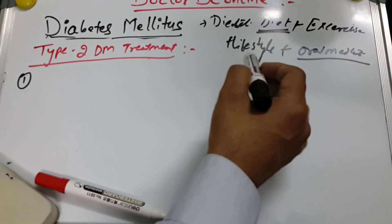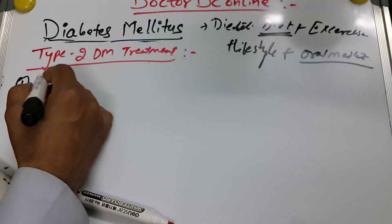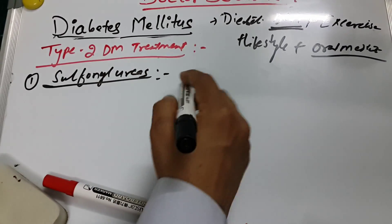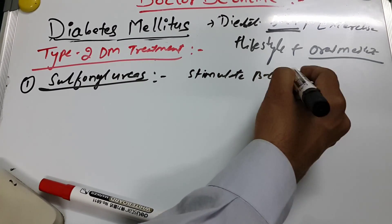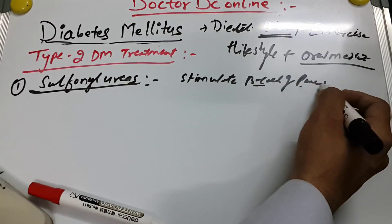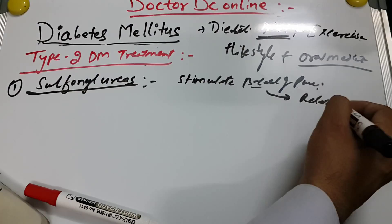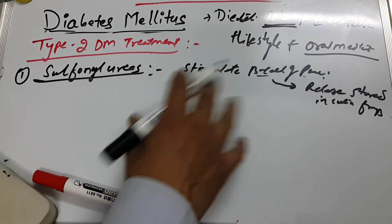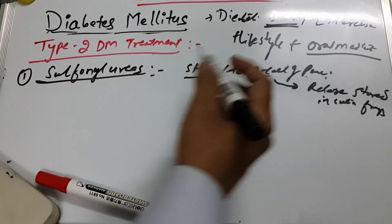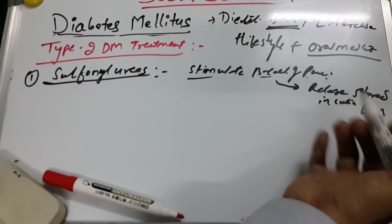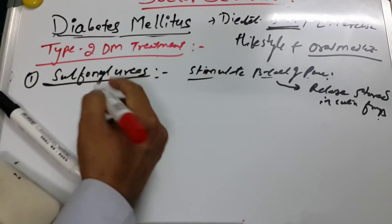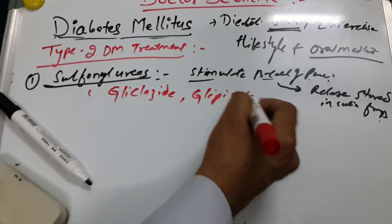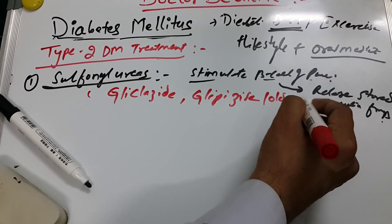The first group of drugs for Type 2 Diabetes Mellitus is sulfonylureas. Their main mechanism of action is to stimulate beta cells of the pancreas and release stored insulin from the beta cells. Important drugs in this group include glyclazide, which is given primarily for older people, and glimepiride.